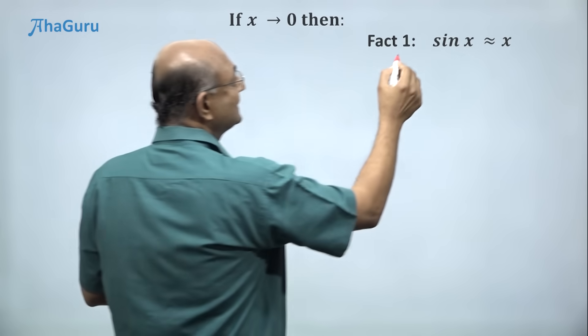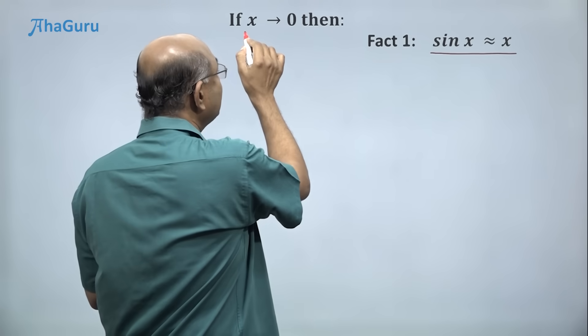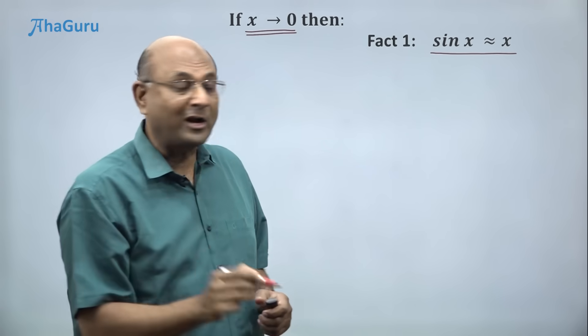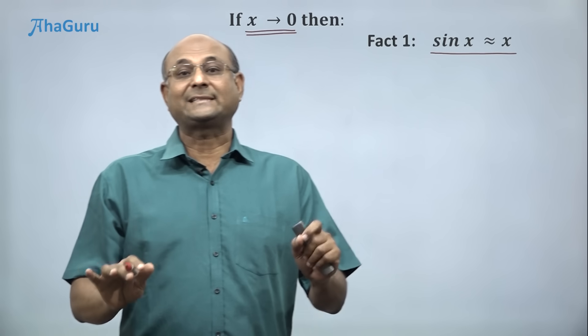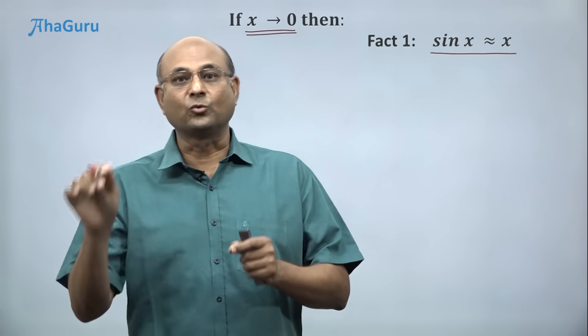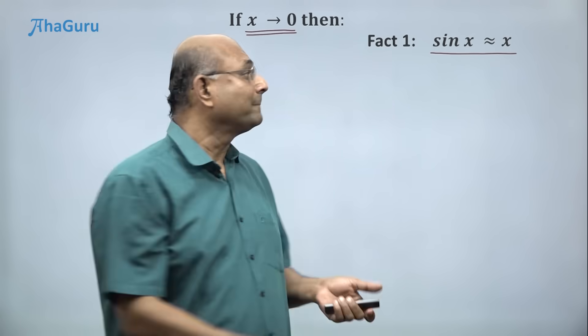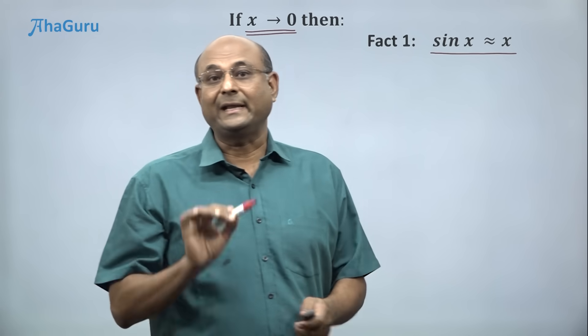So what is fact number 1? Sin x is approximately x. If x tends to 0, that is x is very small, you can replace sin x by x. We know this as a limit formula: sin x by x tends to 1. But the limit formula is an approximation formula as well. So sin x is approximately x.